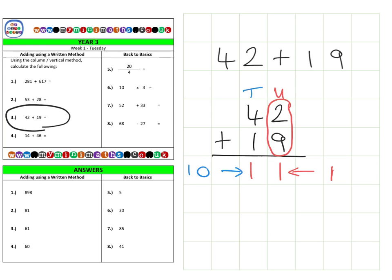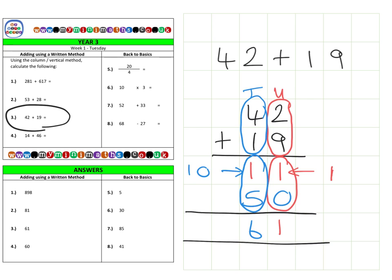And finally, we have our tens column. So we have forty plus ten. No carrying over needed into the hundreds here, so it's a simple fifty. Then when we add them together, we have one add zero is one, and then ten add fifty is sixty, for a final answer of sixty-one.